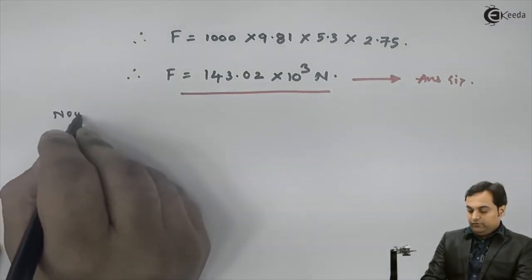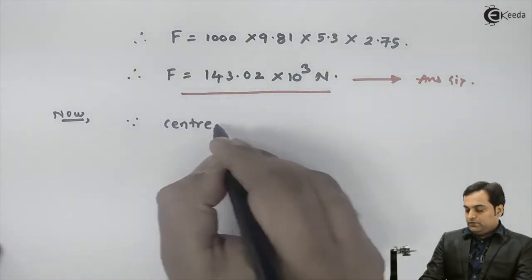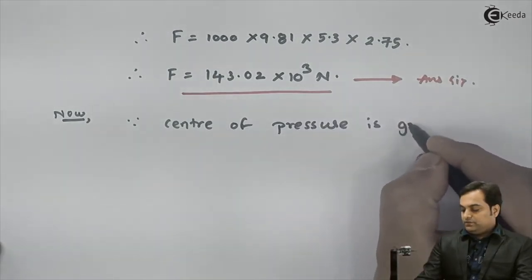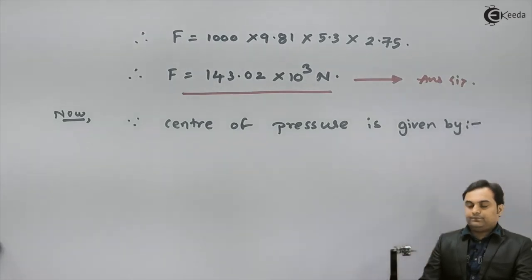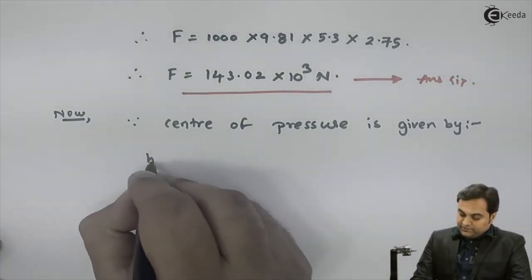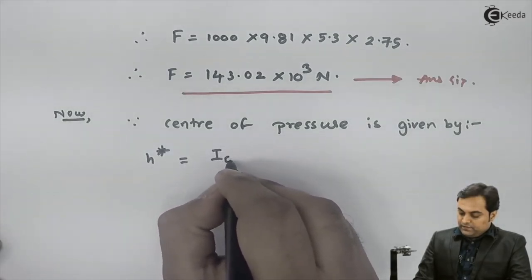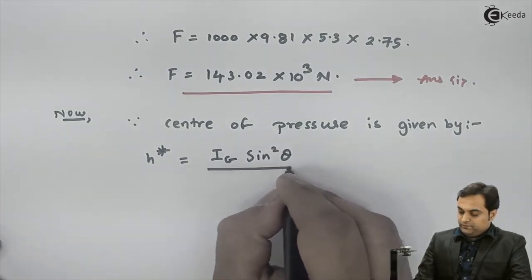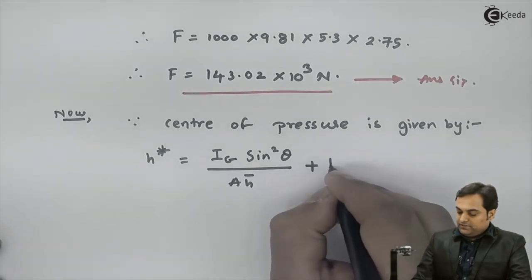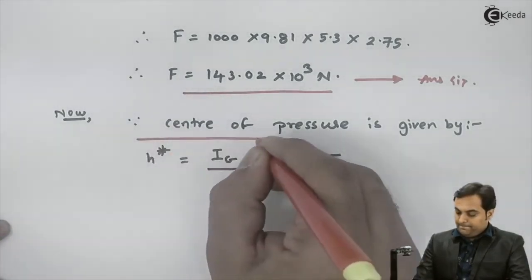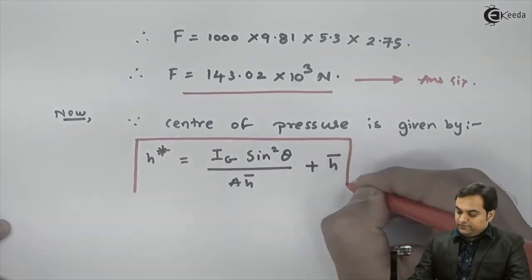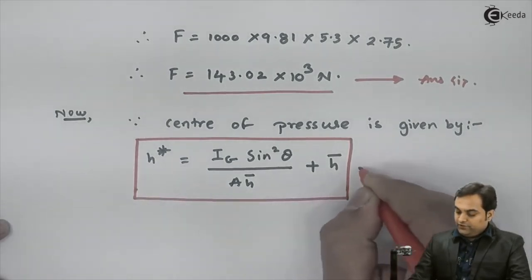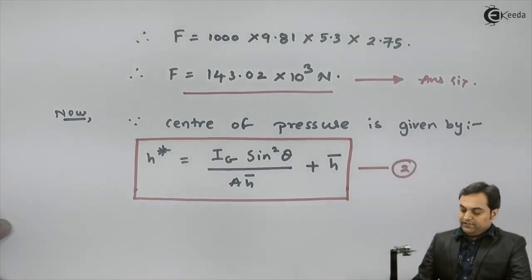Now I'll find the center of pressure. The center of pressure is given by the formula: h* = (Ig × sin²θ) / (A × h̄) + h̄. This is equation number two, which gives the location of the center of pressure from the free surface for an inclined plate.